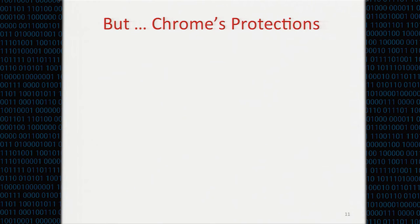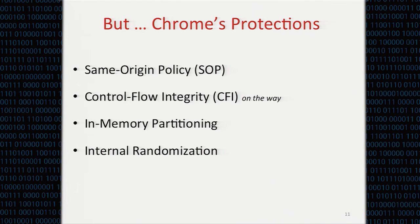These attacks look straightforward in concept. However, we are missing a very critical detail: how to bypass the SOP enforcement. Chrome also applies other in-memory protections, making it more difficult to bypass SOP. The protections are: control flow integrity (CFI), in-memory partitioning, and internal randomization. These protections are Chrome-specific, but browsers that include all sub-resources on one page into the same process must implement some in-memory protections to guard against memory exploits.